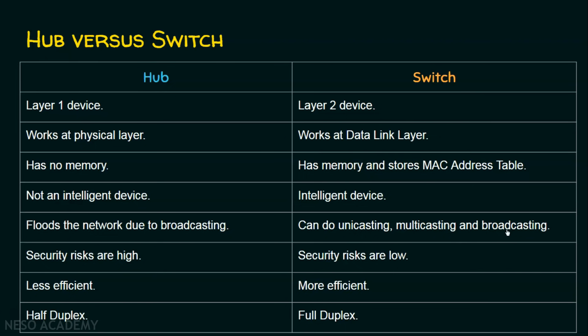Since hub does broadcasting always, security risks are very high because there are chances for internal threats, whereas security risks are low in case of switch. So hubs are less efficient and switches are more efficient. Hubs always work in half-duplex mode — they can send or receive data but not both at the same time — whereas a switch can do sending and receiving at the same time. This is the comparison table between the hub and the switch.